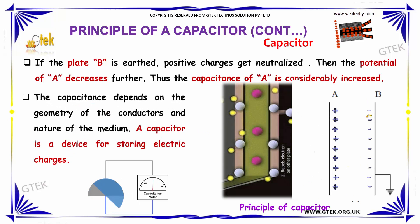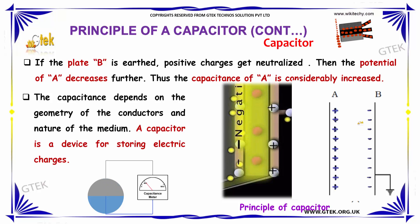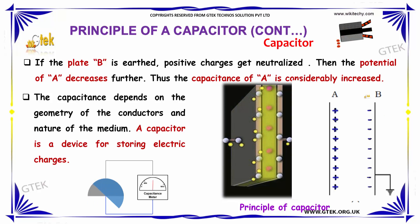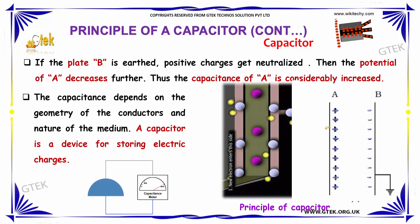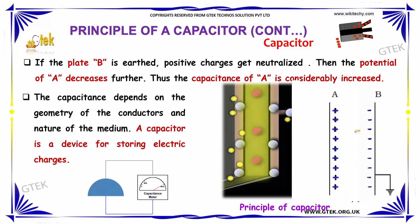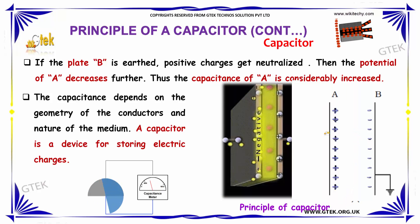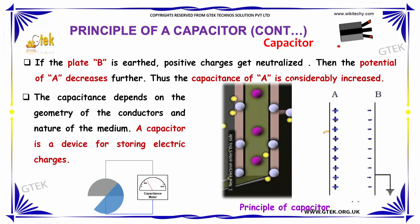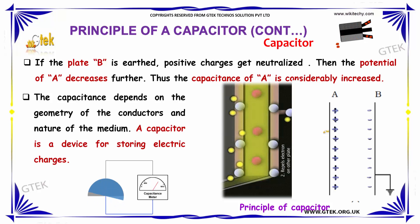If plate B is earthed, the positive charges get neutralized. Then the potential of A decreases further, and thus the capacitance of A is considerably increased. The capacitance depends on the geometry of the conductors and the nature of the medium. A capacitor is a device for storing electric charges.